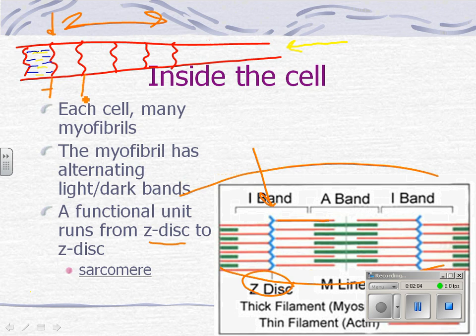This is called a sarcomere. 'Mere' means unit, and 'sarco' means flesh or muscle — we're actually going to learn 'sarco' in our roots quiz next time. So sarco is muscle, and mere is unit.